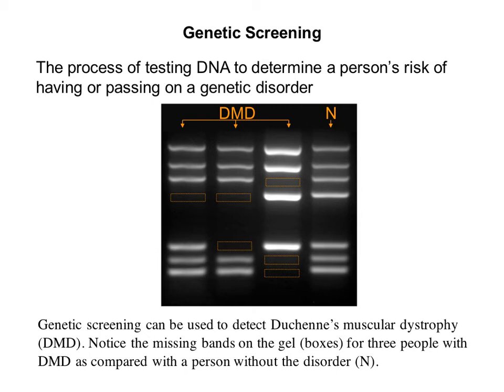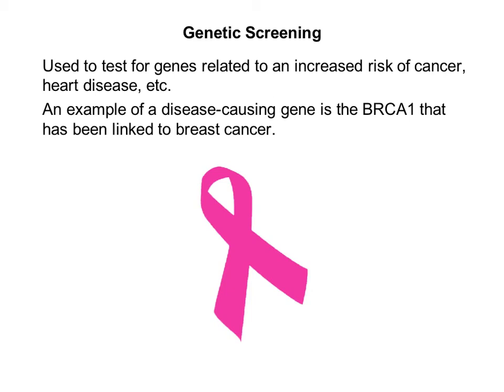This gel map shows that genetic screening can be used to detect a version of muscular dystrophy because of the missing bands on the gel. Genetic screening can also be used to test for genes related to an increased risk of cancer, heart disease, and other disorders. An example is a disease-causing gene called BRCA1, which has been linked to breast cancer — if a person has this gene, they have an extremely high risk of getting breast cancer. You can get tested for this through BRCA analysis, and if a woman finds out she has this disorder, she can get an elective mastectomy — removing the breast tissue — because if there's no breast tissue, you can't get breast cancer. This has saved many lives because if you have the BRCA1 gene and do get breast cancer, it's often extremely aggressive and hard to treat.